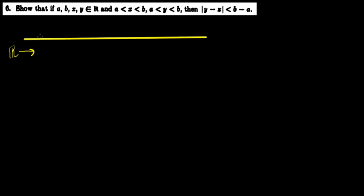And here, if A is right here, then since B is strictly greater than A — since B is strictly greater than X, which is strictly greater than A — we know for sure that B is strictly greater than A. Then B will be over here to the right of A. And since X is strictly greater than A and strictly less than B, then X is somewhere in between A and B. And same with Y.